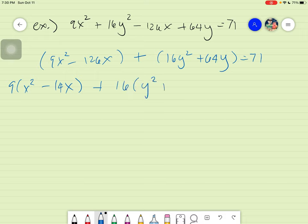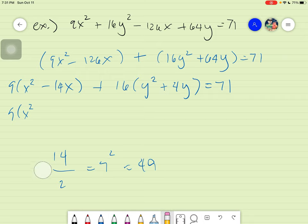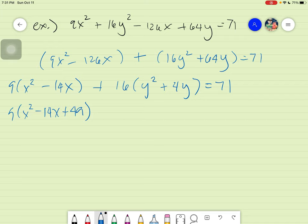you have 16y squared plus, and 64 divided by 16. The answer is 4y equals to 71. The next thing that you need to do is you have to apply completing the square on this part. So what would happen here is you will have this. You have to take the 14 divided by 2 and get the square. 14 divided by 2 is simply 7 and 7 squared is 49. So meaning, you will add 49 here.